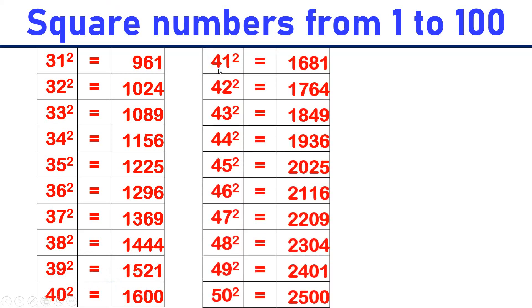41 square is equal to 1681. 42 square is equal to 1764. 43 square is equal to 1849. 44 square is equal to 1936. 45 square is equal to 2025.